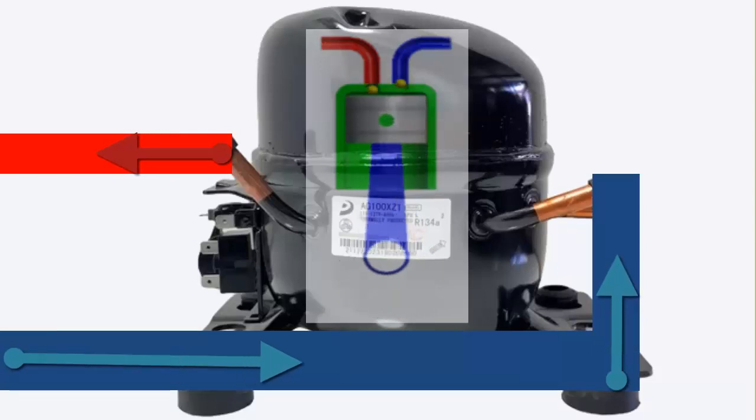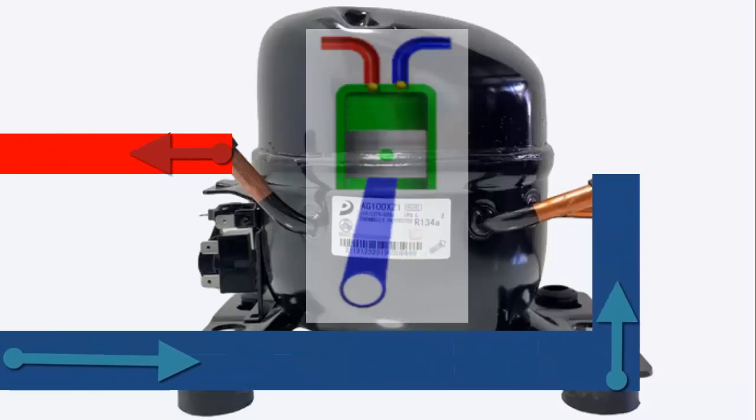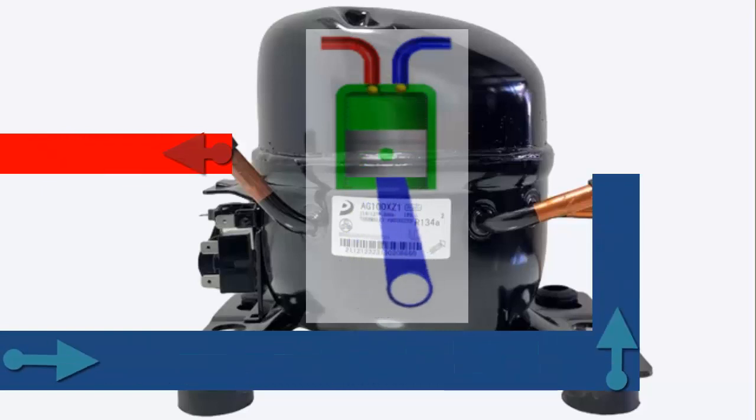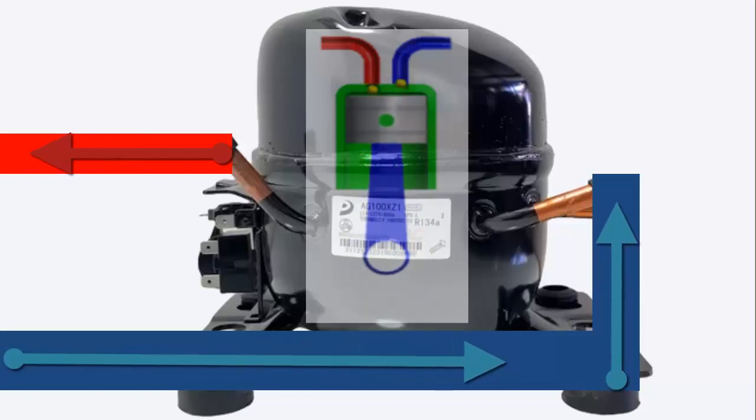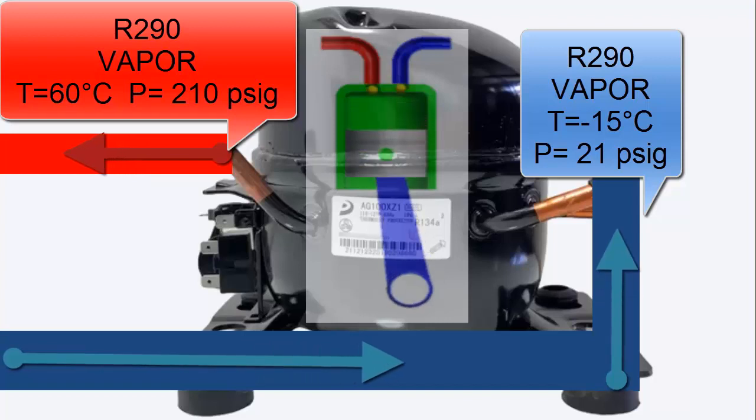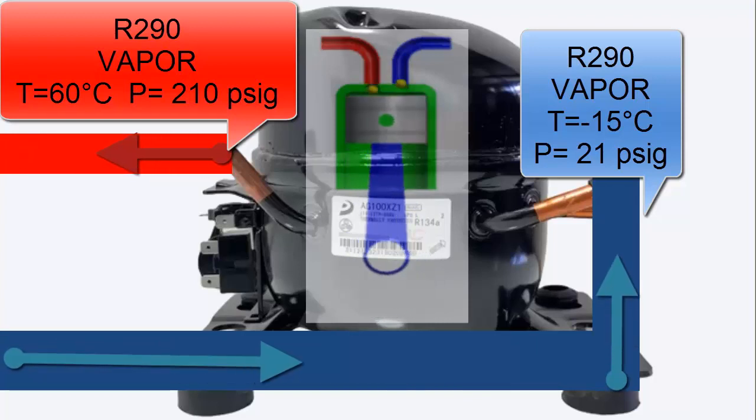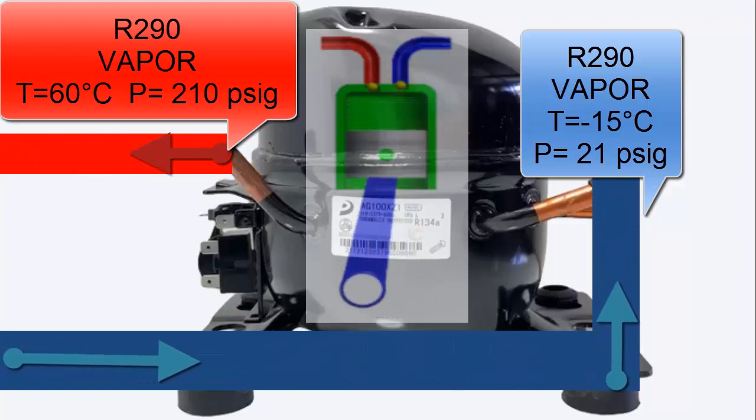The pressure and temperature of the R290 refrigerant increase considerably in the compressor. The pressure of the R290 at the compressor outlet reaches a value close to 210 pounds per square inch. The temperature of the R290 at the compressor outlet can be around 60 degrees Celsius.